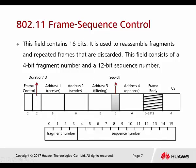The sequence control field contains 16 bits — 2 bytes. It's used to reassemble fragments and discard repeated frames. This field consists of a 4-bit fragment number and a 12-bit sequence number.